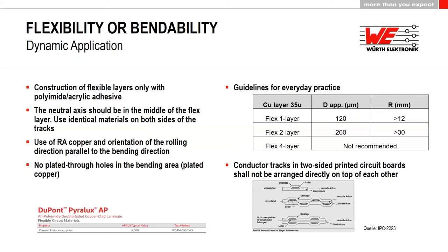For everyday practice guidelines: a single-layer flex PCB with polyamide should have a thickness of 120 microns and a bending radius greater than 12 mm. For two layers, thickness is about 200 microns and the radius should exceed 30 mm. Flex layers with more than four copper layers are not recommended for dynamic application. Also, traces should not be directly arranged on top of each other — there should always be a shift between layers from top to bottom.